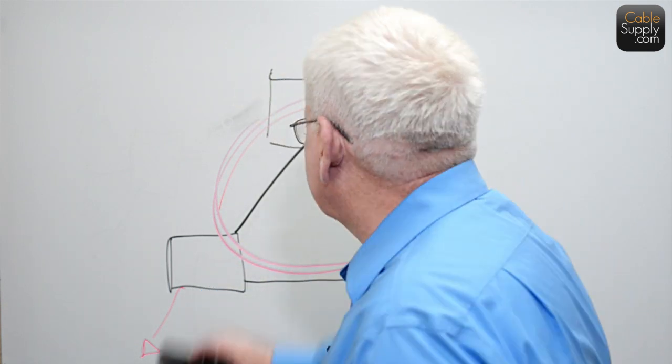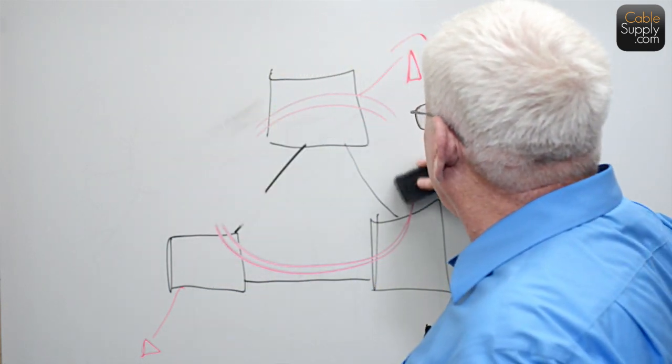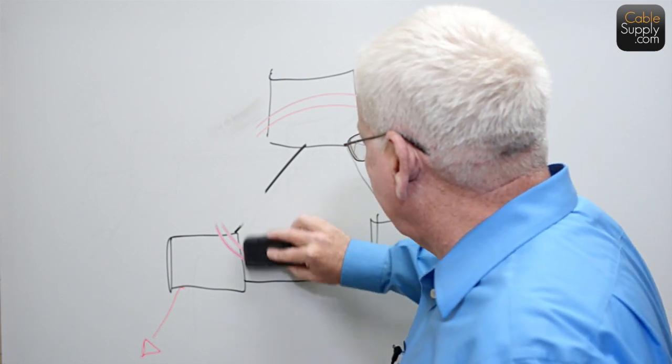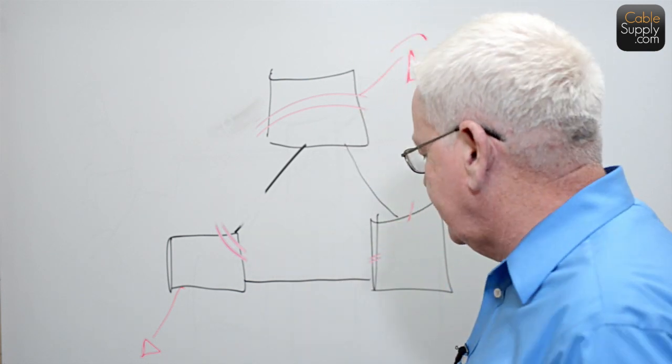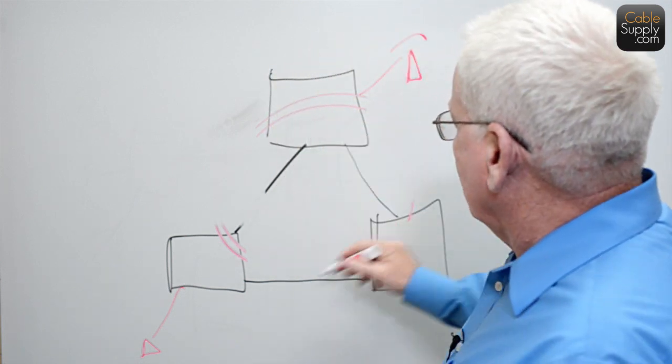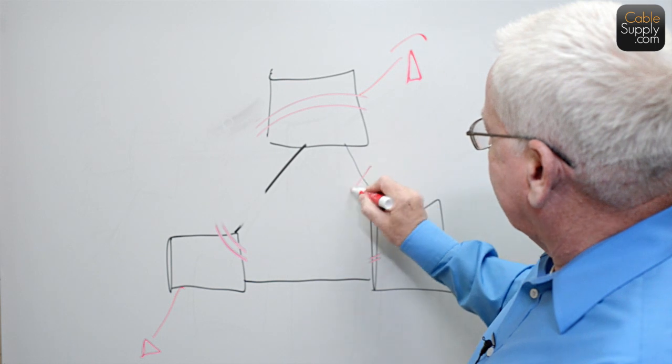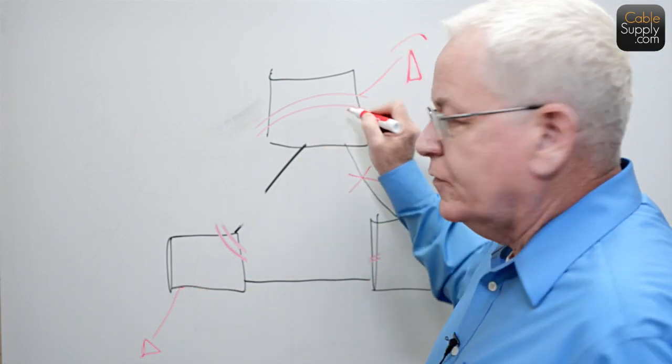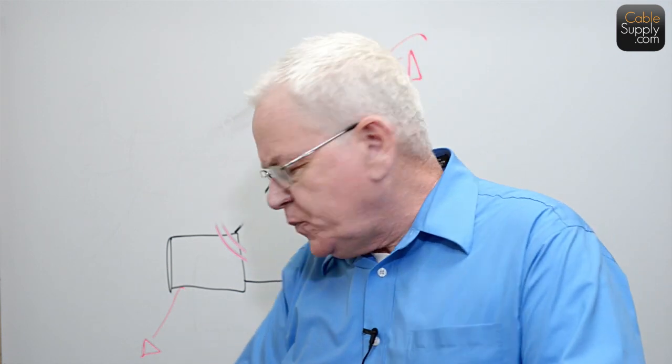So spanning tree protocol wants to stop loops. How it stops loops is these switches talk to themselves. The higher end switches do a better job at this than some of the lower end switches. What they will do is they'll say, we can talk this way, we don't really need this link here. So no matter what happens, there's a dead end.